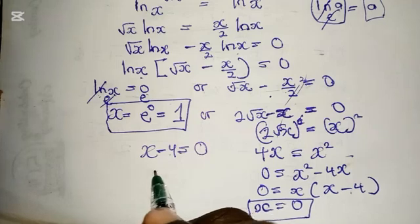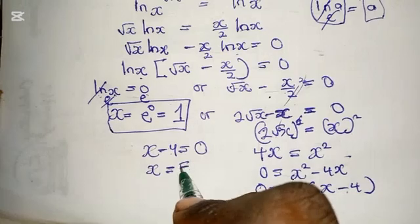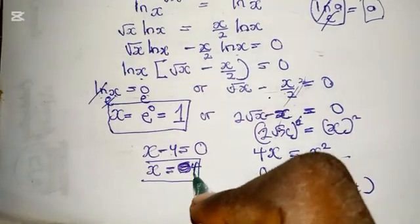Now, collect like terms. We have x equals minus... no, x equals... what's wrong with me? Sorry, guys. It's equal to 4.